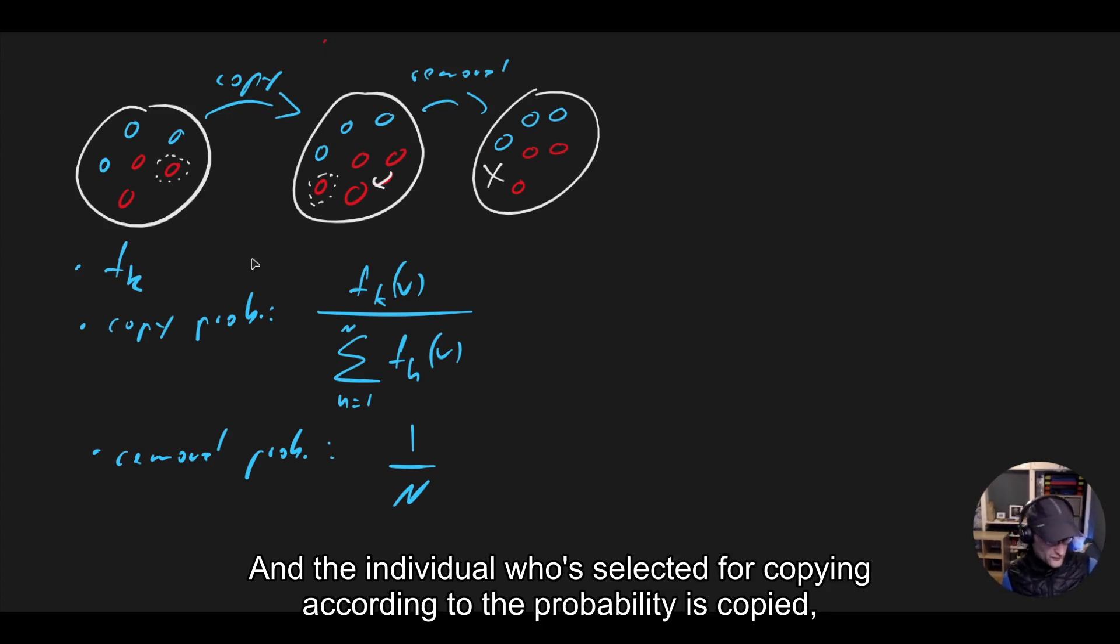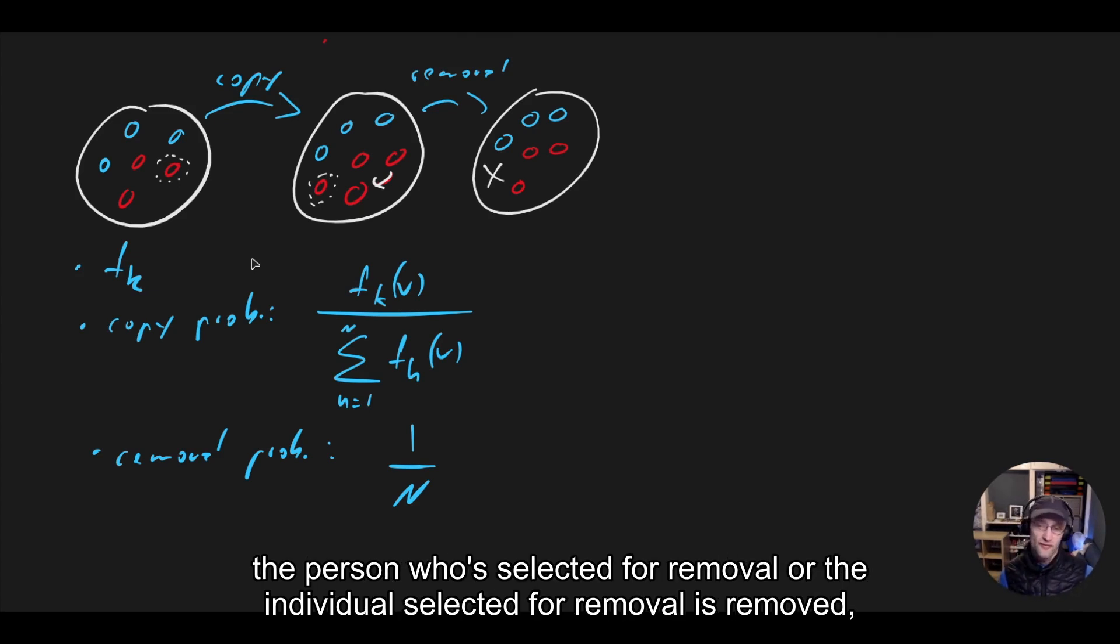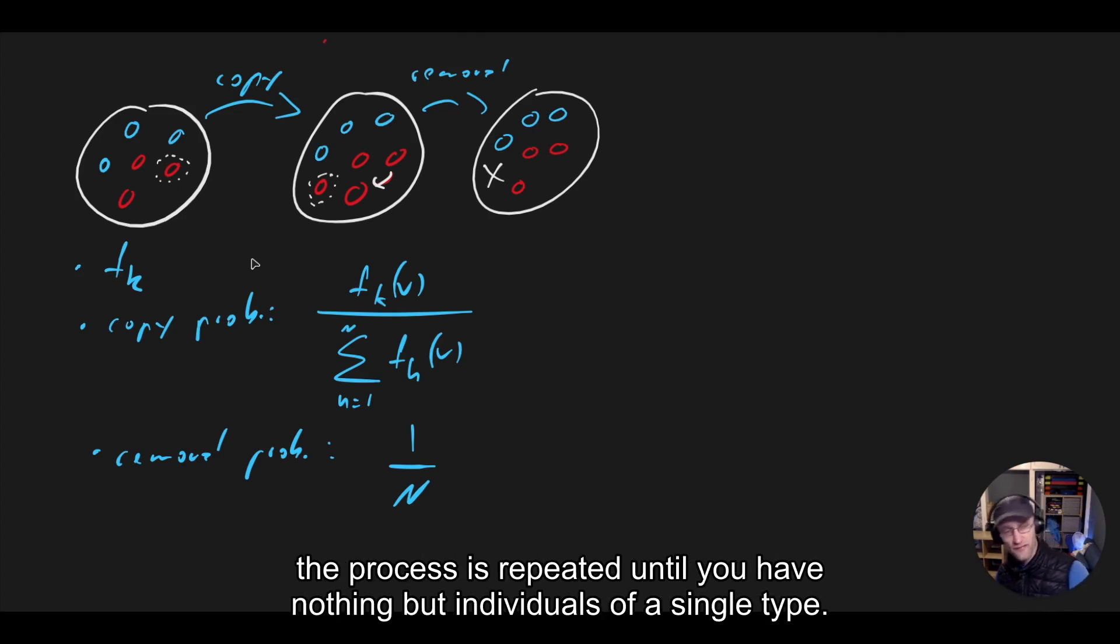And the individual who's selected for copying according to the probability is copied. The person who's selected for removal, or the individual selected for removal, is removed. And this process is repeated until you have nothing but individuals of a single type.